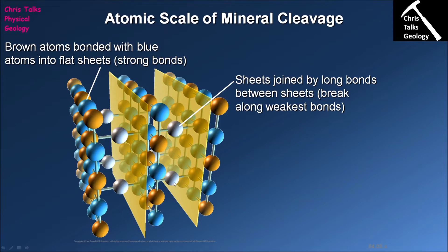The reason that the cleavage planes run parallel to each other is because crystals by their very nature must have an organized internal structure. This means the same weakness is going to appear again and again, and so the cleavage planes will always be running parallel to each other because the same weakness is just being repeated in the crystal structure.